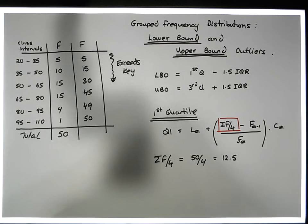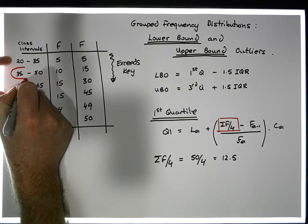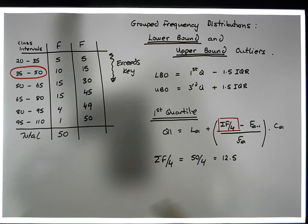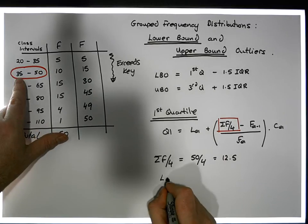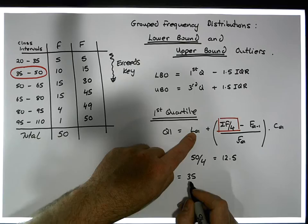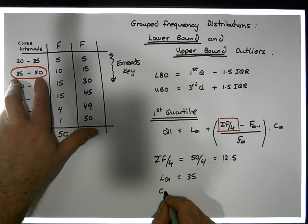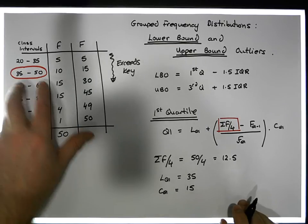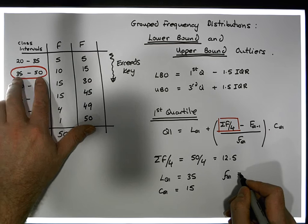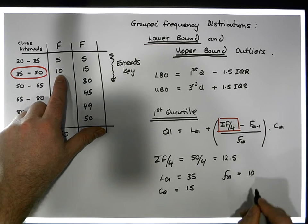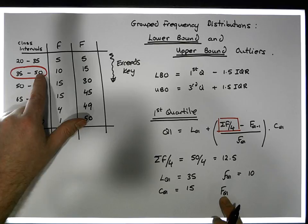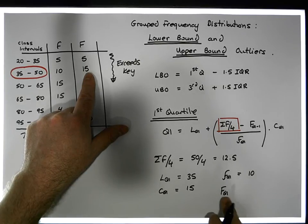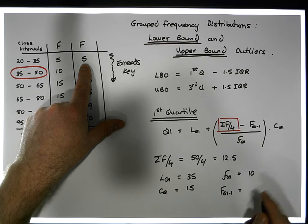This identifies the first quartile class. We have all our values relative to this class. L of Q1 is the lower bound of the quartile class, so L of Q1 equals 25. C of Q1 is the width of the quartile class, so C of Q1 equals 15. Small f of Q1 is the actual frequency of the quartile class, which is 10. Capital F of Q1 minus 1 is the cumulative frequency of the class before the quartile class, which gives us 5.